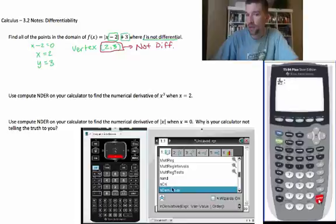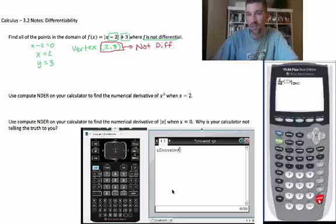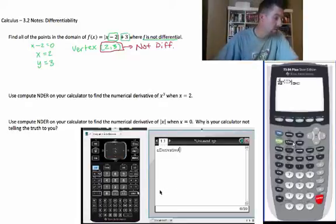Use compute NDER on your calculator to find the numerical derivative of absolute value of x when x equals 0. Why is your calculator not telling you the truth?